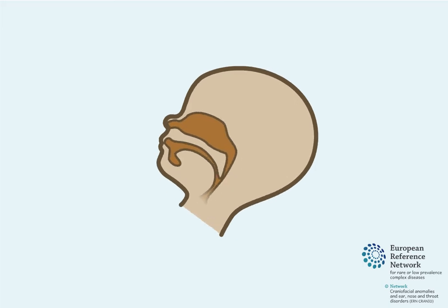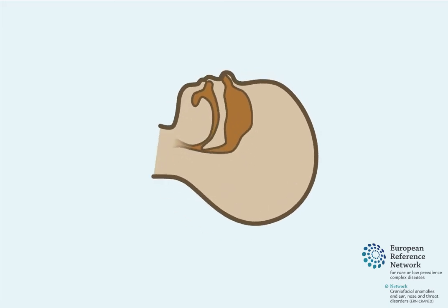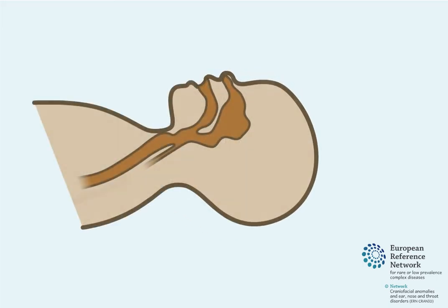In the case of such situations, a surgical procedure called a tracheostomy can be performed. A tracheostomy is usually performed under general anaesthesia, which means that the child is asleep during surgery.